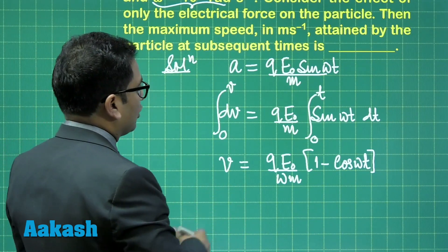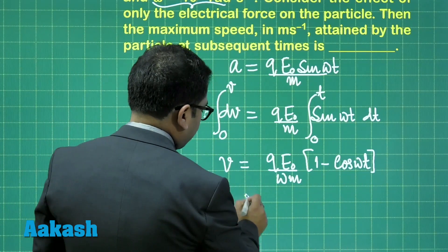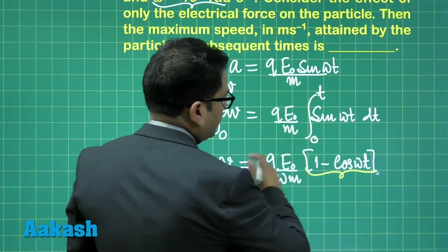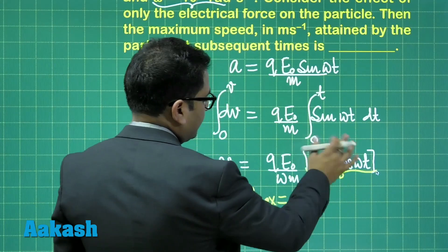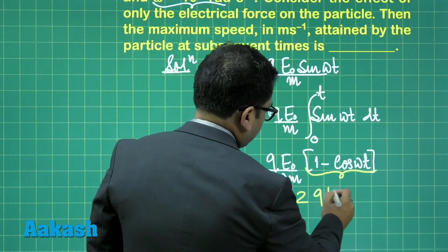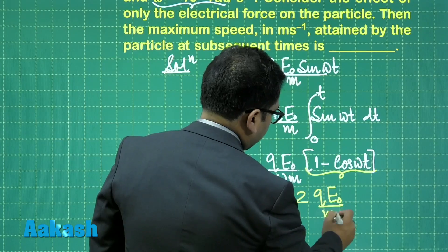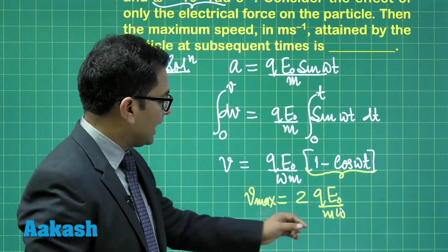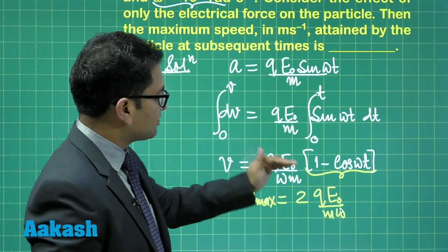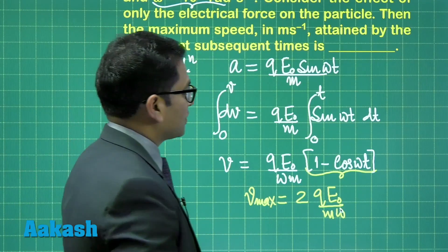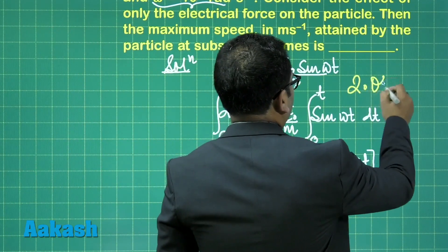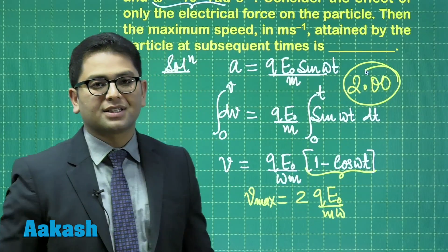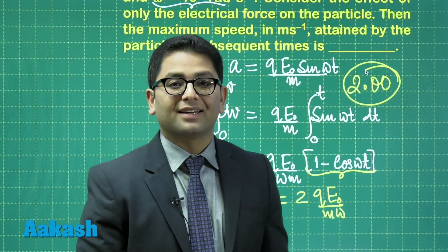It is not interested when is the speed maximum. All it is interested is, what is the maximum speed? So, when I get v_max, the value of v_max would be, this is going to be 2 for maximum, because this would be minus 1, and that now comes out to be 2q E₀ divided by mω. You just put the value of q E₀ by mω, that comes out to be 1, and eventually the maximum speed comes out to be 2 meter per second. So, here the correct answer for this will be 2.00. That's the maximum speed during the course of its motion. Right then, let's move to the next question.